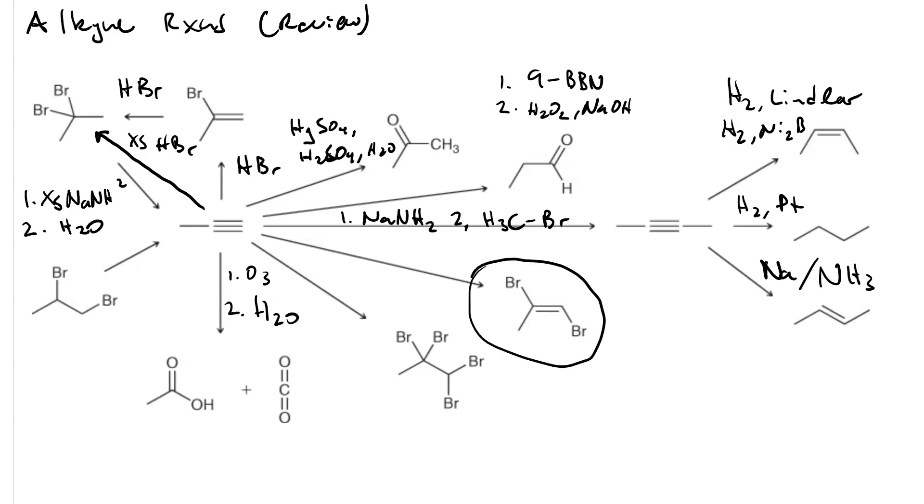If we want to go from our original alkyne to a trans-vinyl dibromide, or I guess I should say an E-vinyl dibromide, we use one equivalent of Br2 and CCl4.